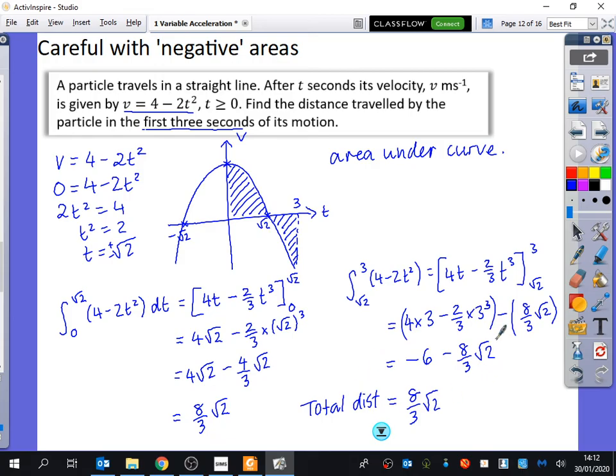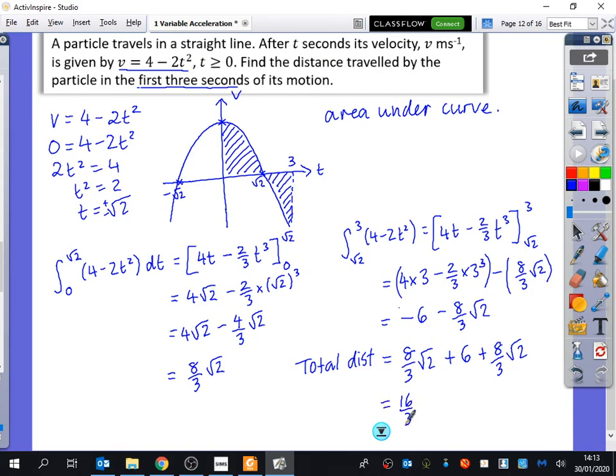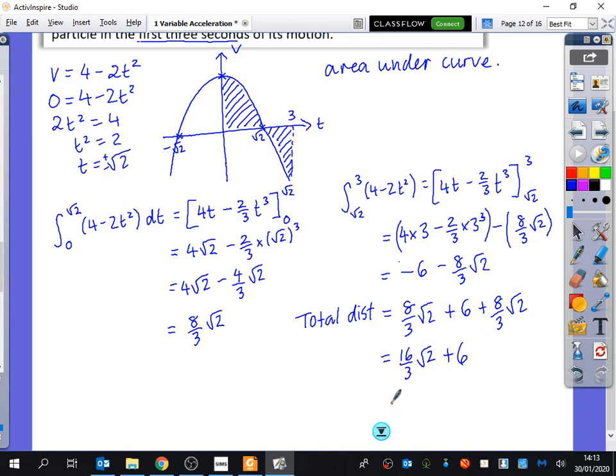So the total distance is 8 over 3 root 2. What do I need to do with this distance? I need to make it become the positive version of this. So I'm going to add on 6 and I'm going to add on 8 over 3 root 2. Obviously if this thing was positive, you'd have to add it on as a negative. So it looks like our final answer is 16 over 3 root 2 plus 6. We could give that as an exact answer, but have you got what that is as a decimal? So 13.5 meters to three significant figures.